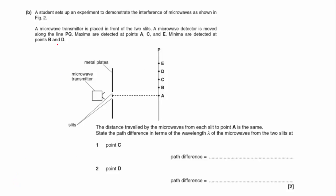Part B. A student sets up an experiment to demonstrate the interference of microwaves as shown in Figure 2. A microwave transmitter is placed in front of the two slits. A microwave detector is moved along the line PQ. Maxima are detected at points A, C and E, and D and B are minima.